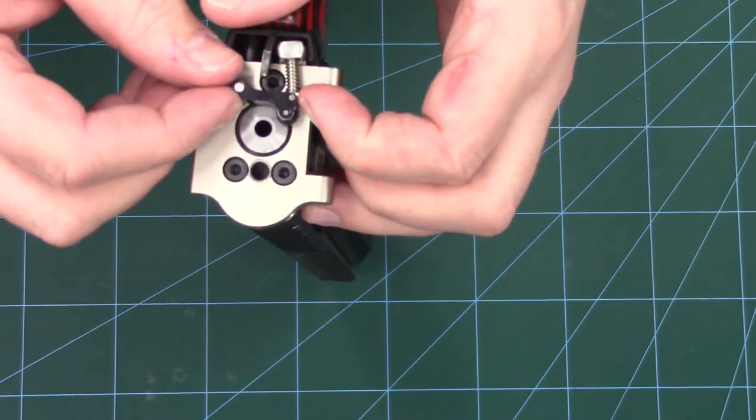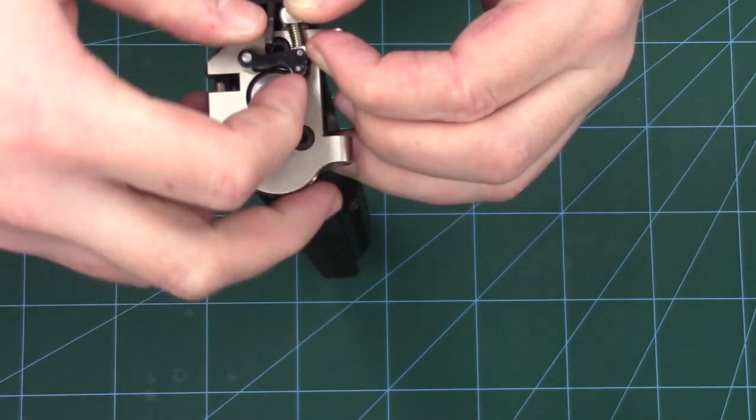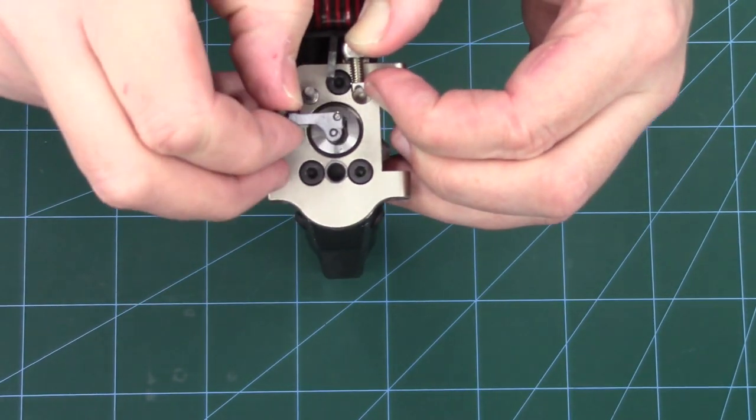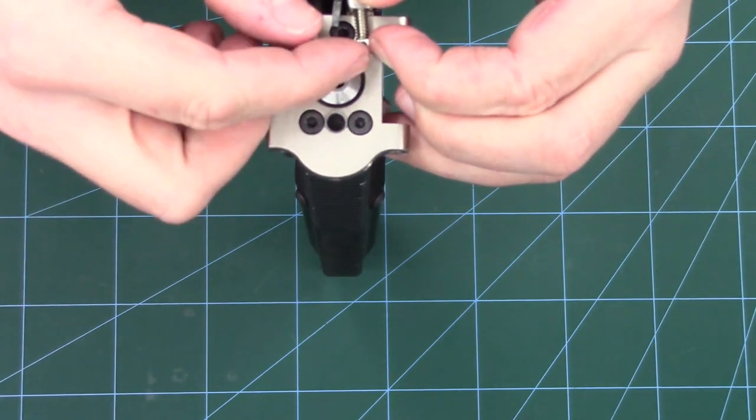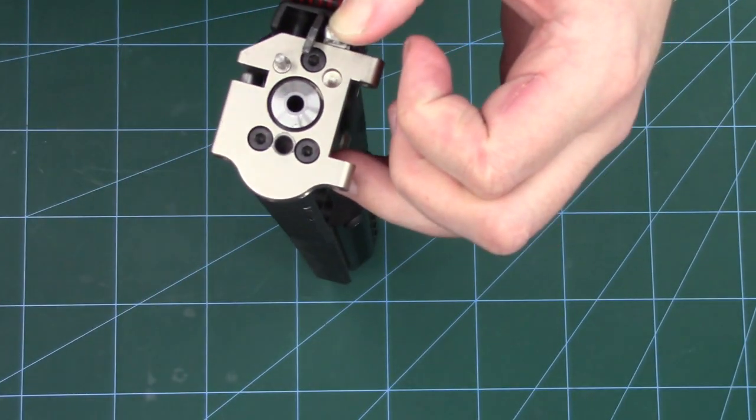Next what we're going to do is pull down this little spring. Then the arm is free to be pulled off. Now obviously this spring's loose now so don't let it ping out. We'll stick the gun to one side.